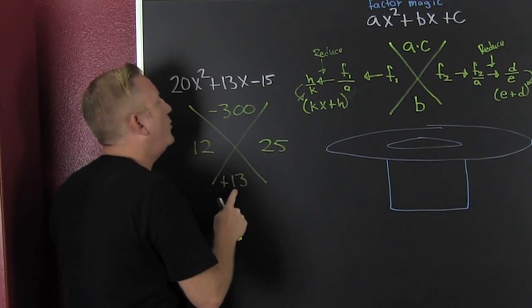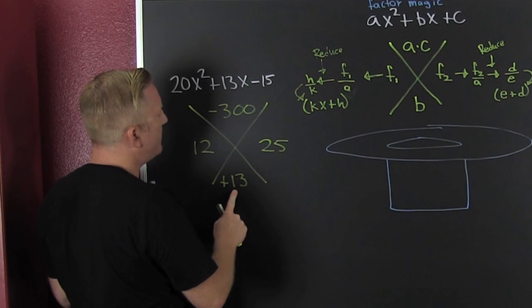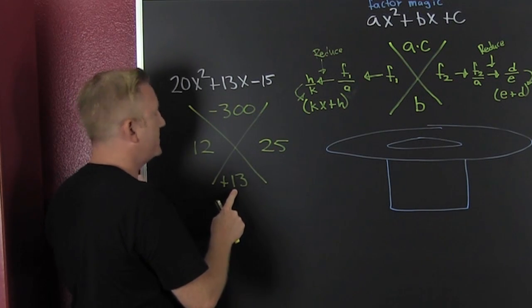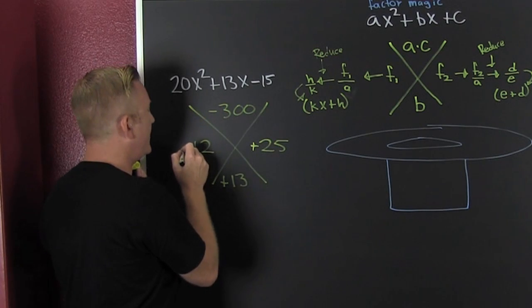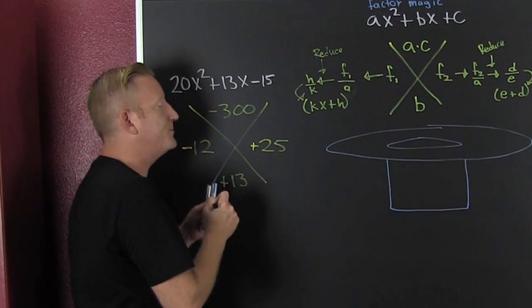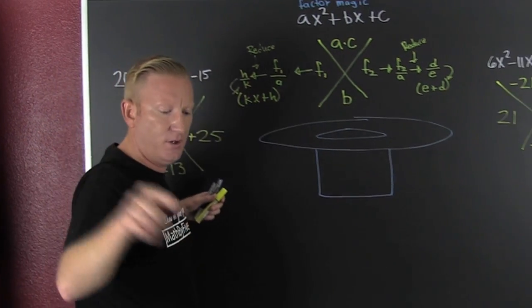12 minus 20, oh yeah. Okay, so it needs to be a positive 13. That means that the 25 is positive and the 12 is negative because they need to subtract. They need to be opposite signs.